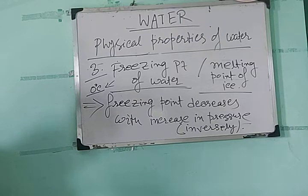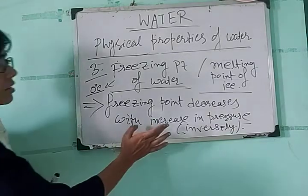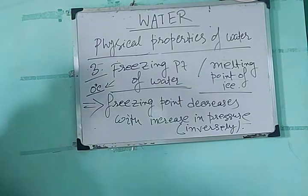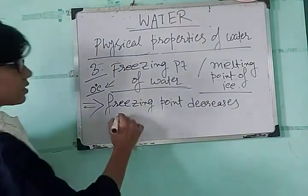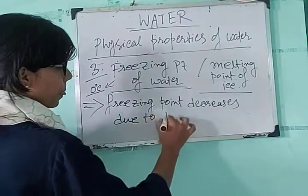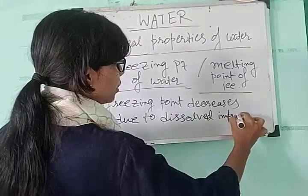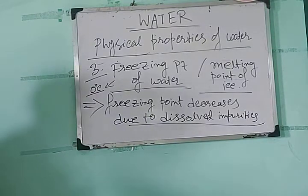The freezing point of water also decreases due to the presence of dissolved impurities. So there are two factors affecting the freezing point: increasing pressure decreases the freezing point, and dissolved impurities also decrease the freezing point.